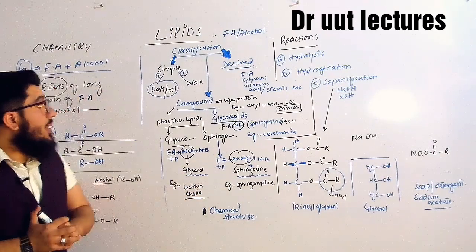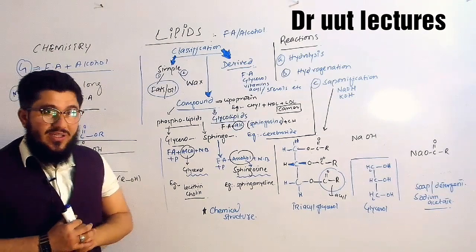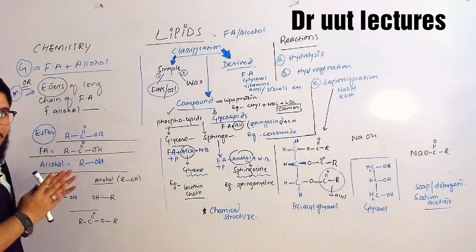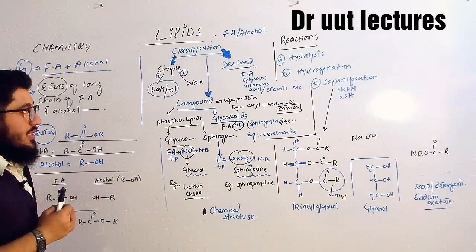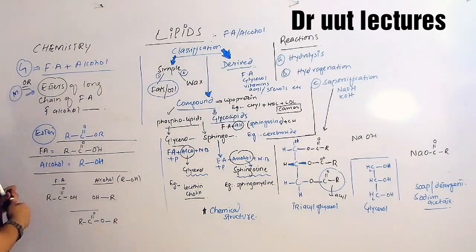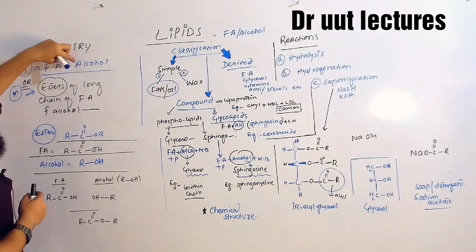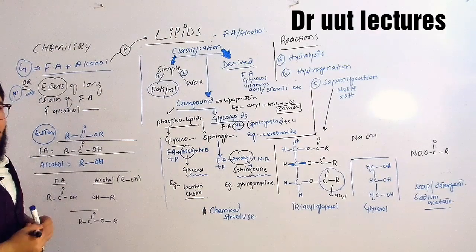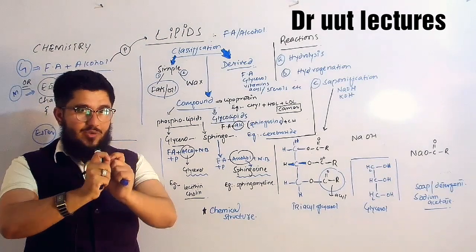In this lecture we will talk about the chemistry of lipids, the classification of lipids, and the reactions of lipids. Let's start from the chemistry of lipids. This chemistry is actually also the definition of lipids — if someone asks what is the definition of lipids, you can use this chemistry as a definition. So, what is the chemistry or general definition of lipids? Fatty acid and alcohol, when these combine together, they will make a product, and that product is known as lipids.